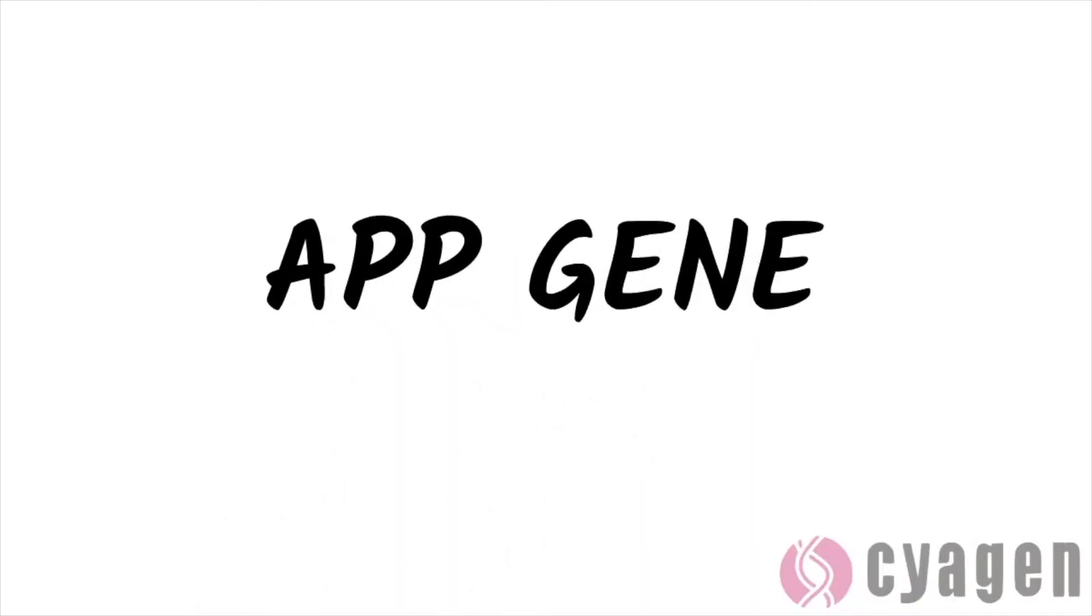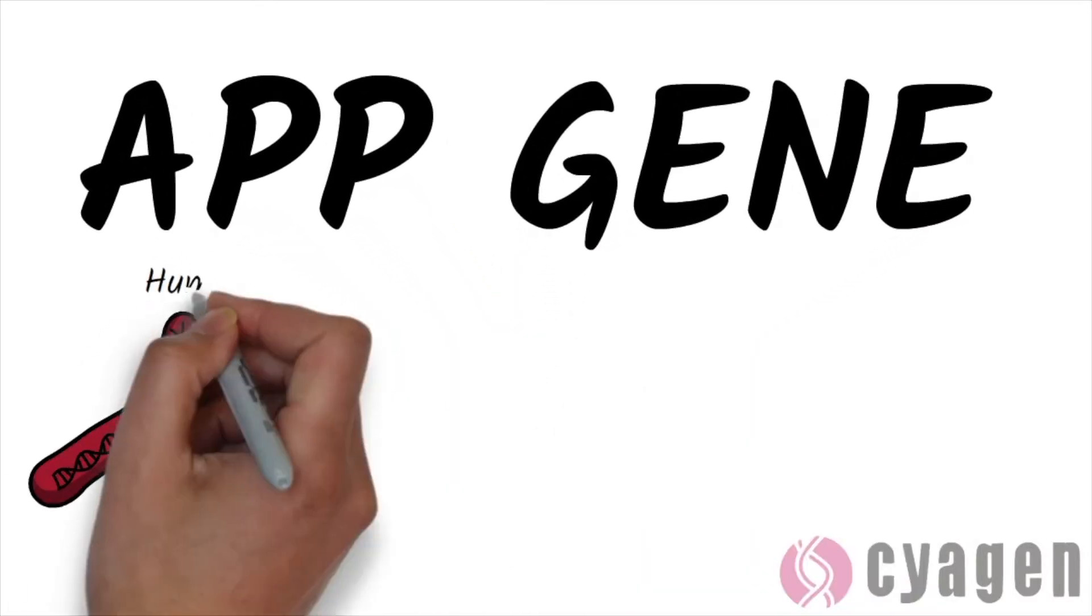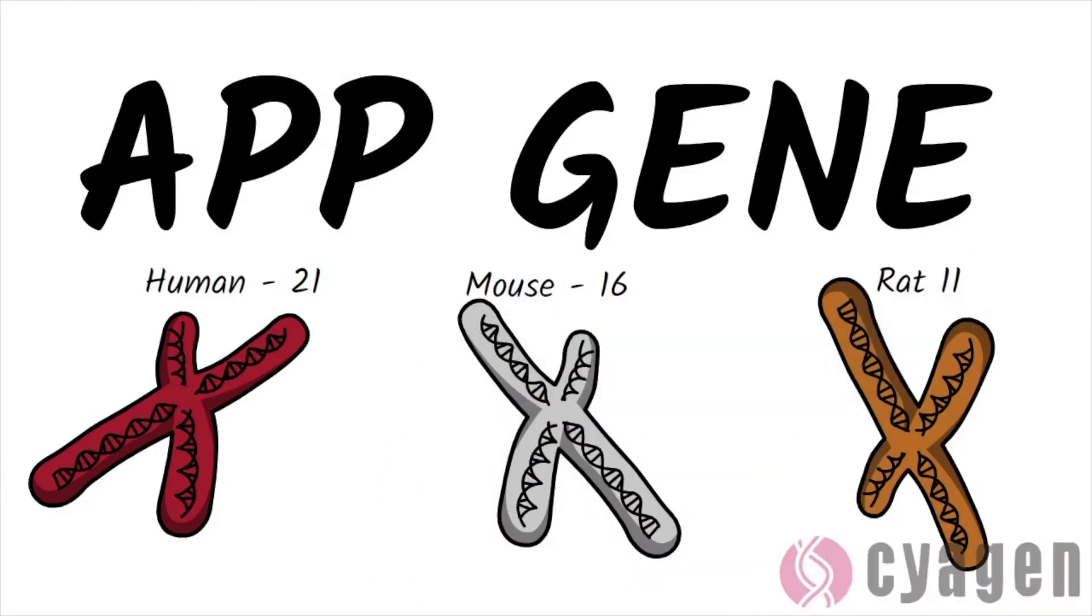The APP gene is found on chromosome number 21 in humans, 16 in mice, and 11 in rats.